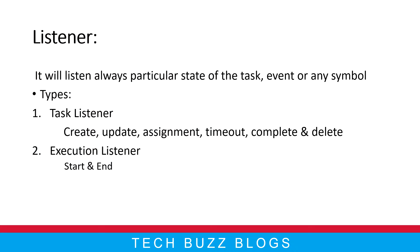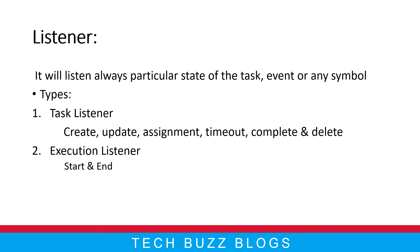The task listener is applicable only for the user task. It will get created. We can update the task — for example, from our earlier discussion, we have a user screen where we can change values and save them, which means we are updating variables. Then for assignment, maybe if I am claiming the task I can assign it to somebody. Then timeout — if a timeout is happening I need to trigger some business logic. And once it is complete or deleted I need to do some business logic. All these events belong to the task listener, which is only applicable for the user task.